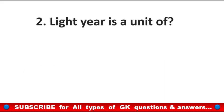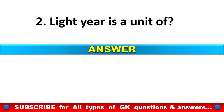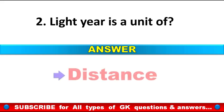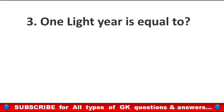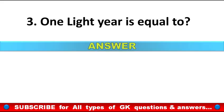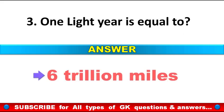Light year is a unit of? Answer: Distance. 1 light year is equal to? Answer: 6 trillion miles.